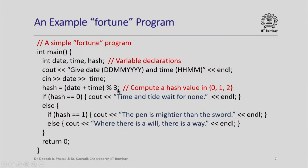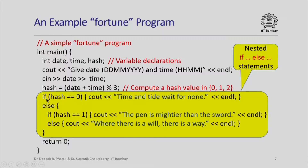This expression always evaluates to a value in {0, 1, 2} because we are computing the remainder on division by 3, and on dividing by 3 the remainder will be one of 0, 1, or 2. Then we check if the value of hash is 0 and print the first message — "time and tide wait for none". If hash is not 0 we check if it is 1 and print the second message — "the pen is mightier than the sword". If hash is neither 0 nor 1, we print "where there is a will, there is a way". This highlighted part uses nested if-else statements, after which we execute return 0.